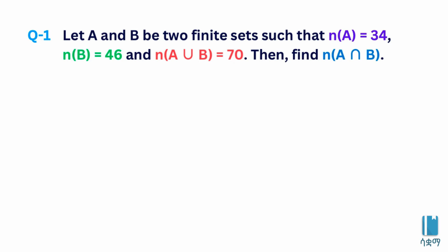The number of elements in A equals 34, number of elements in B equals 46, and number of elements in A union B equals 70. Find the number of elements in A intersection B.